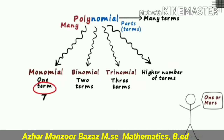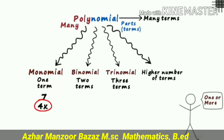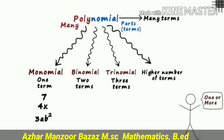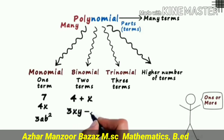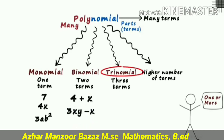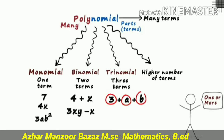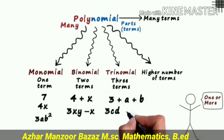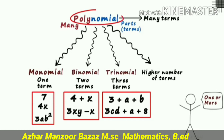I will give an example of each. These are all polynomials. A monomial: 7 is a monomial, 4x is a monomial, 3ab² is also a monomial because it contains a single term. For binomial: 4 plus x is a binomial, separated by a plus or minus operator; 3xy minus x is also a binomial. For trinomial: 3 plus a plus b is a trinomial.